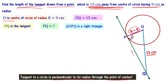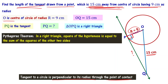We can apply the Pythagoras theorem. In a right triangle, the square of the hypotenuse is equal to the sum of the squares of the other two sides. In this right angle triangle, the side opposite the 90 degree angle is the hypotenuse.